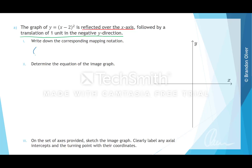So for this, we're going to have x, y, and that will map to x. If we are reflecting over the x-axis, it's the y value that's multiplied by negative 1, so we'll have negative y. That's our mapping for the first part of the transformation. For the second part, we still have x and negative y, and the translation of one unit in the negative y direction is represented as negative y minus 1.